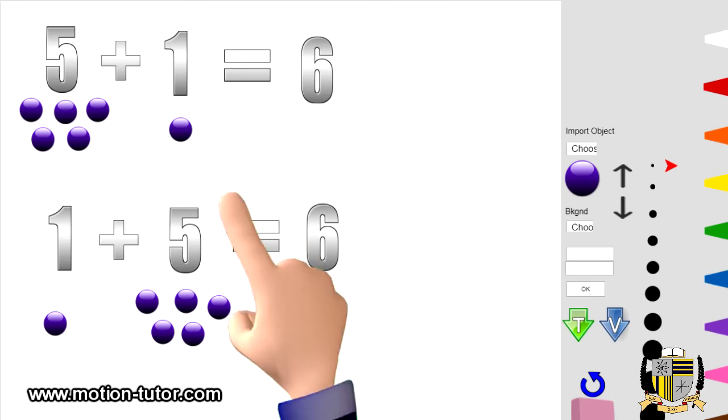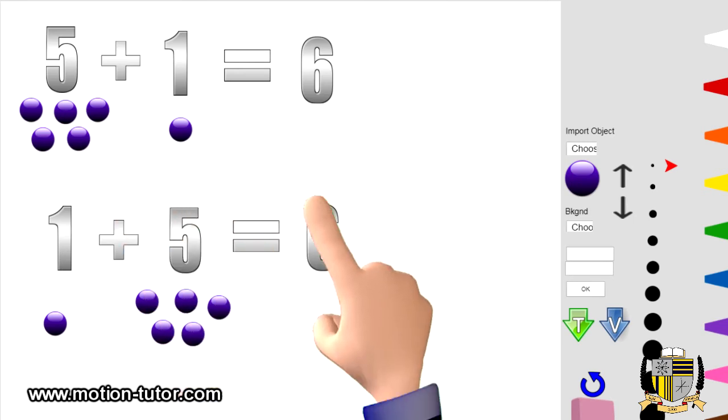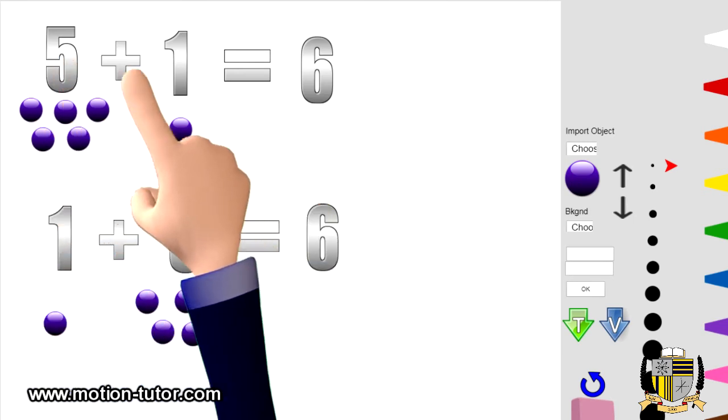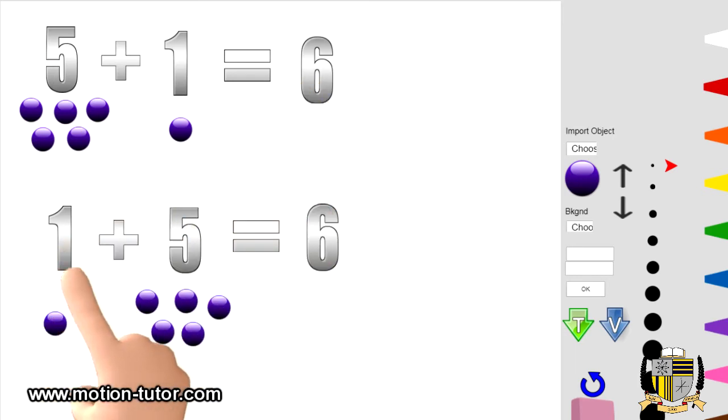So we see again that the order does not matter. Five plus one is the same thing as one plus five. They're both equal to six.